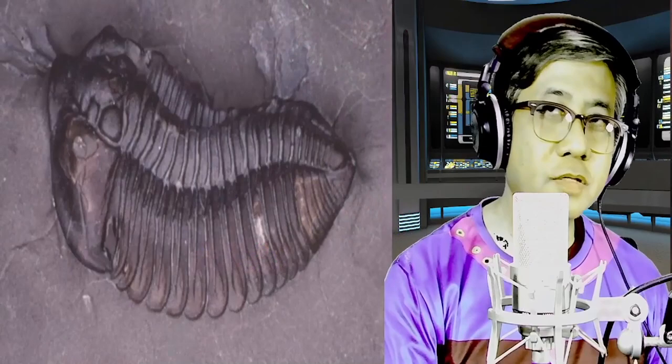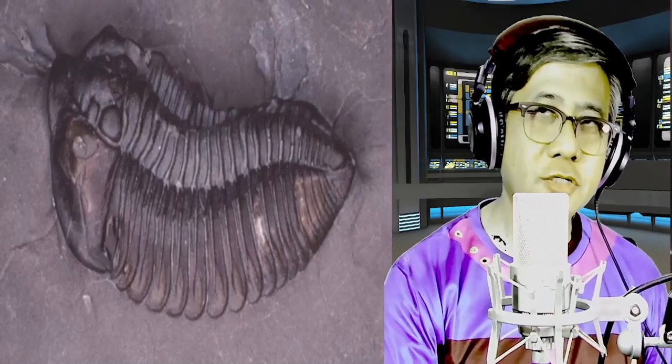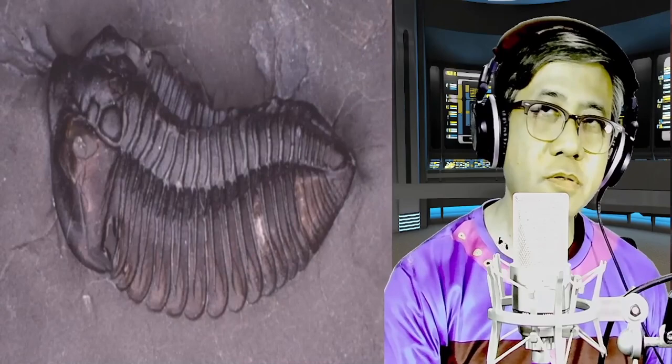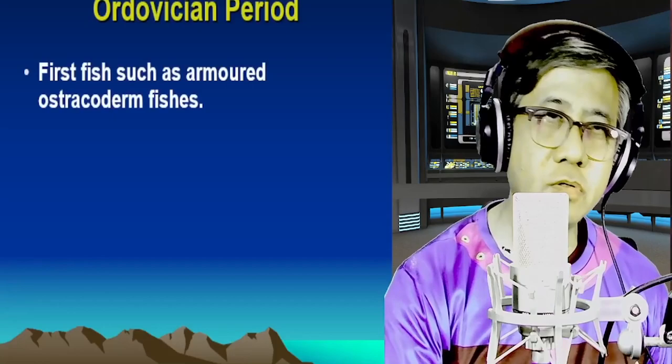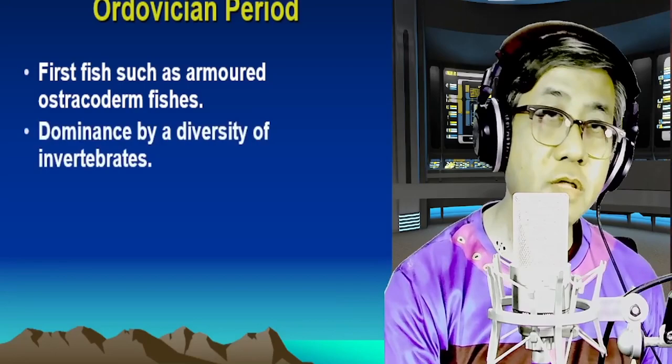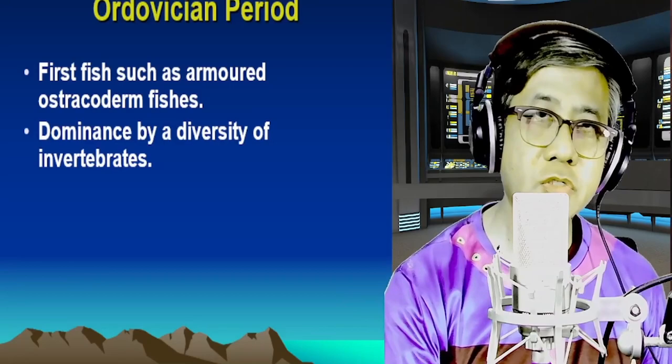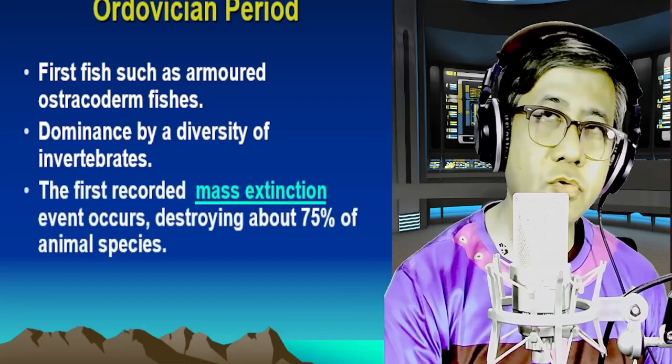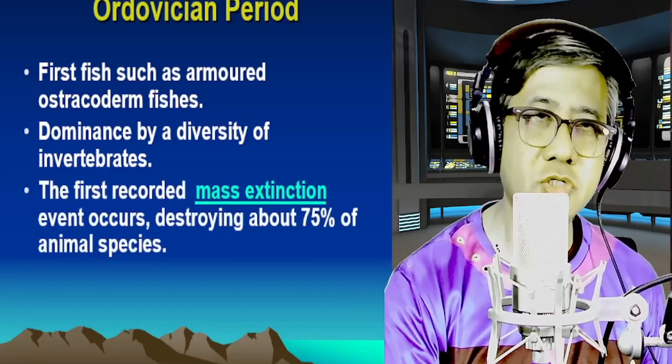I hope that video helped you visualize further the major events that occurred during the Cambrian period. Our next period under the Paleozoic era is the Ordovician period. The Ordovician period can be characterized by the emergence of the first fish, such as the armored ostracoderm fishes, and the continued dominance of a diversity of invertebrates. During the Ordovician period, we saw the first recorded mass extinction, destroying about 75% of animal species.